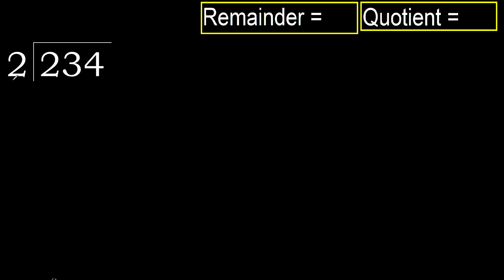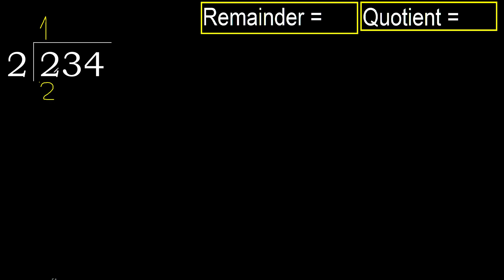234 divided by 2. 2 is not less, therefore 2 multiplied by which number is nearest to 2 but not greater? 2 multiplied by 2 is 4 — 4 is greater. 2 multiplied by 1 is 2 — is not greater. Subtract.